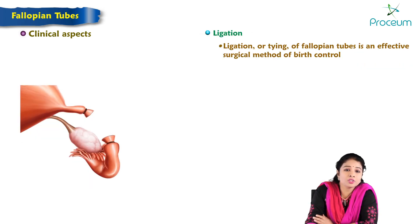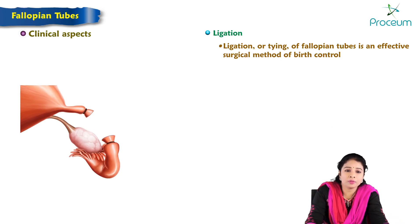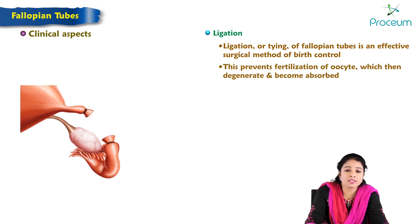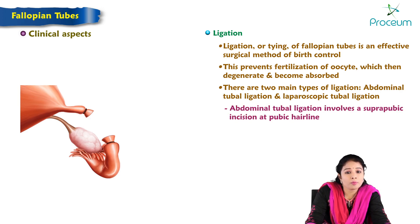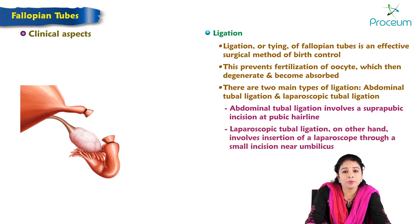Ligation or tying of the fallopian tubes is an effective surgical method of birth control. This prevents fertilization of the oocyte, which then degenerates and is absorbed. There are two methods: abdominal tubal ligation, which involves a suprapubic incision at the pubic hairline, and laparoscopic tubal ligation, which involves the insertion of a laparoscope through a small incision near the umbilicus.